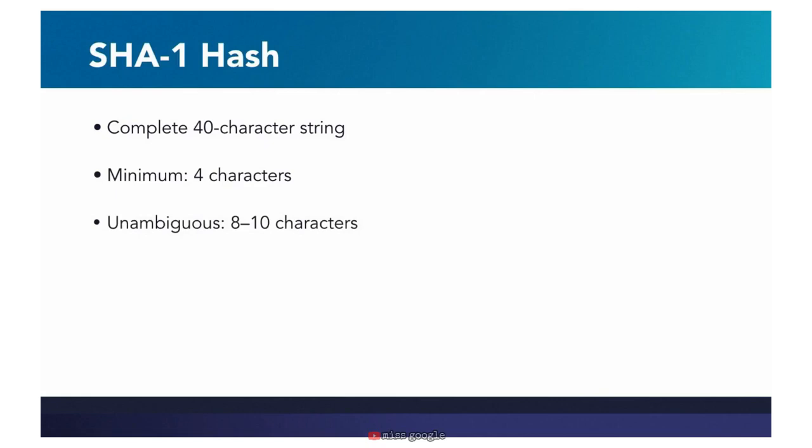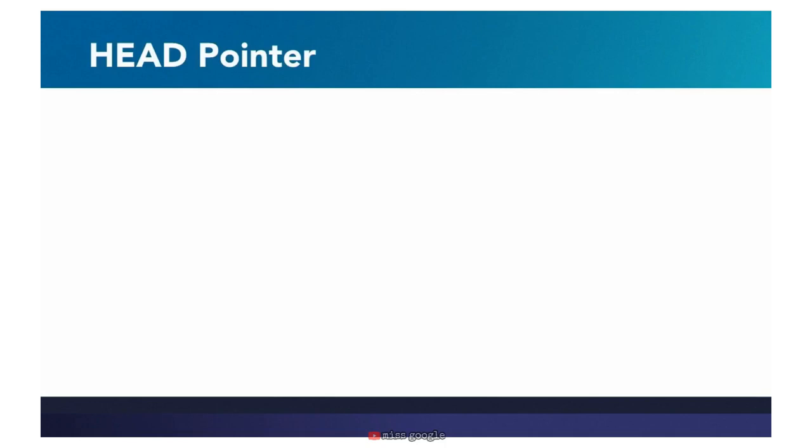On a really large project you might need to use more characters. You can use them with your Git commands — for example, git show followed by 8 characters representing the SHA. Git keeps track of the most recent commit using the head pointer. The head pointer is a reference to the tip of the current branch. It's similar to an analog tape recorder — it's where the play head is positioned for recording new commits. Usually it points at the commit you made last, but it can be moved around.